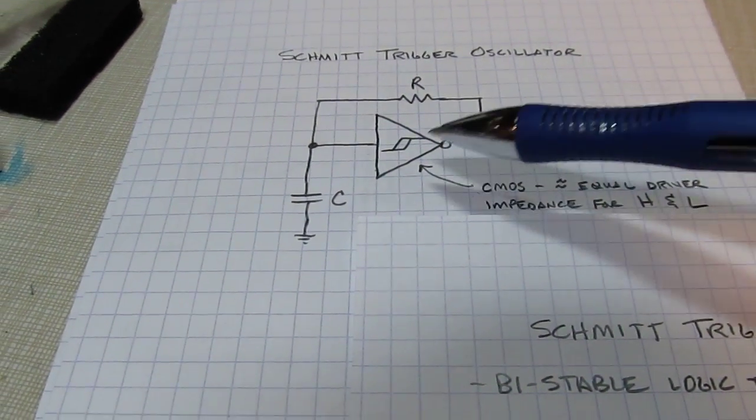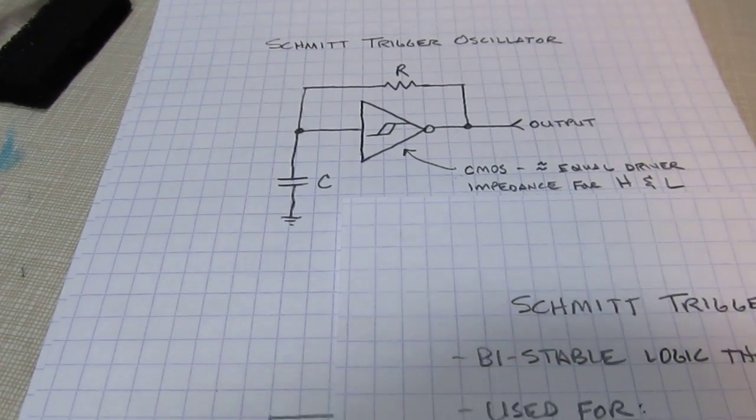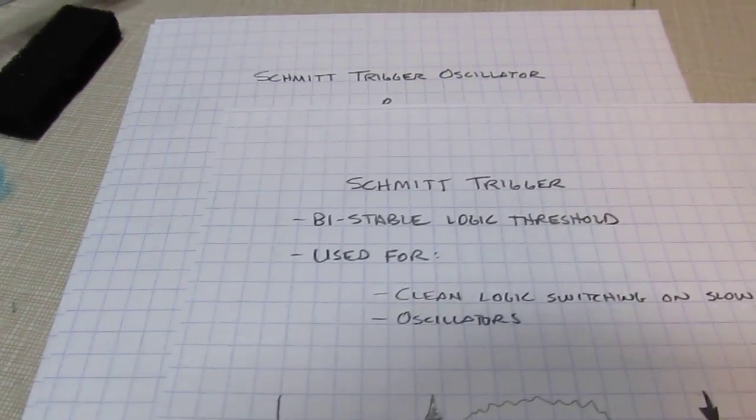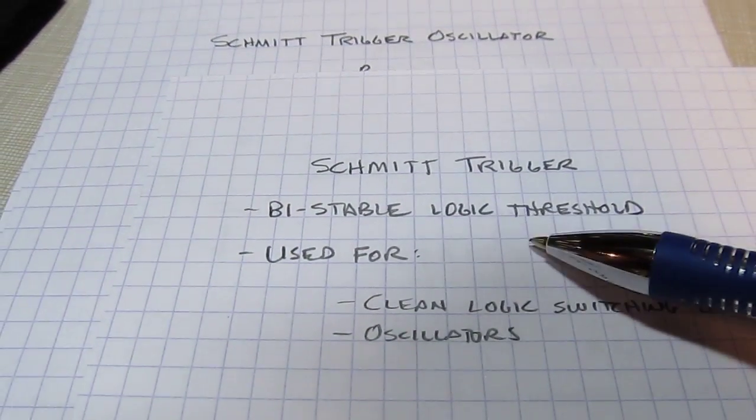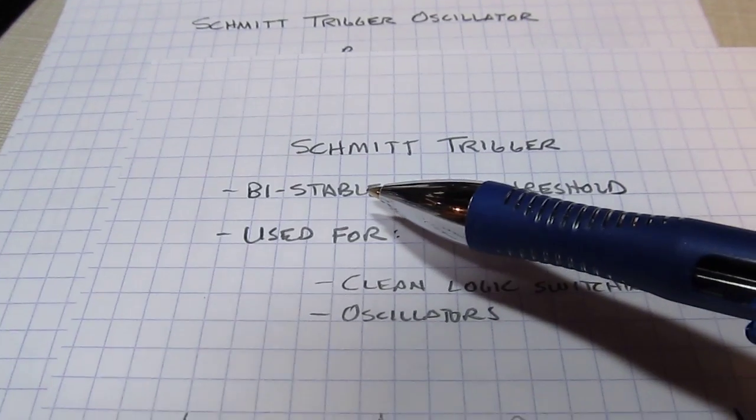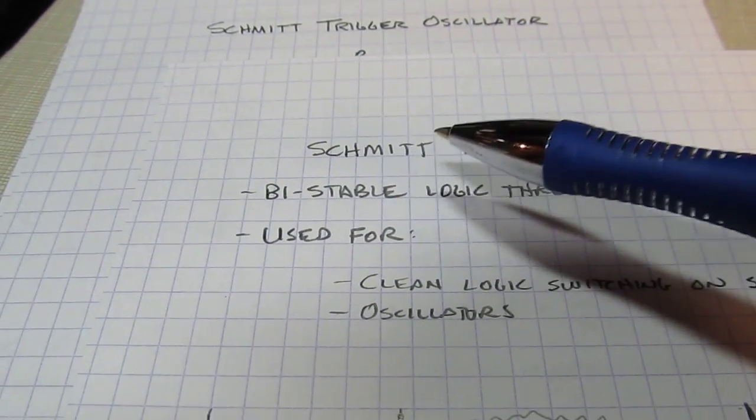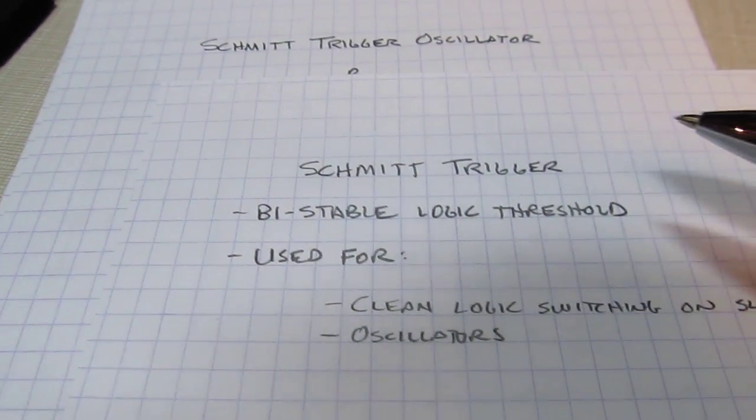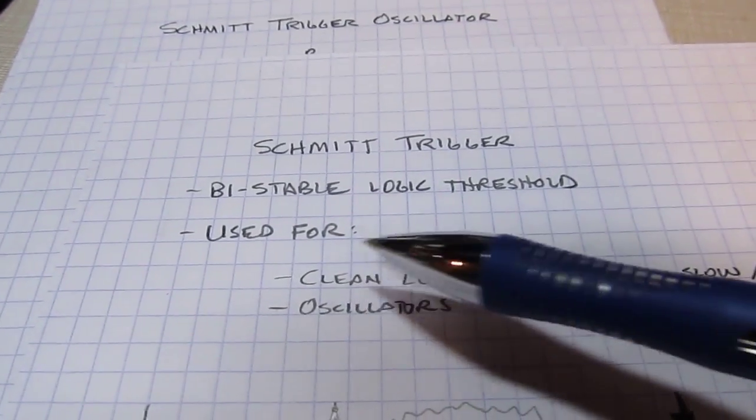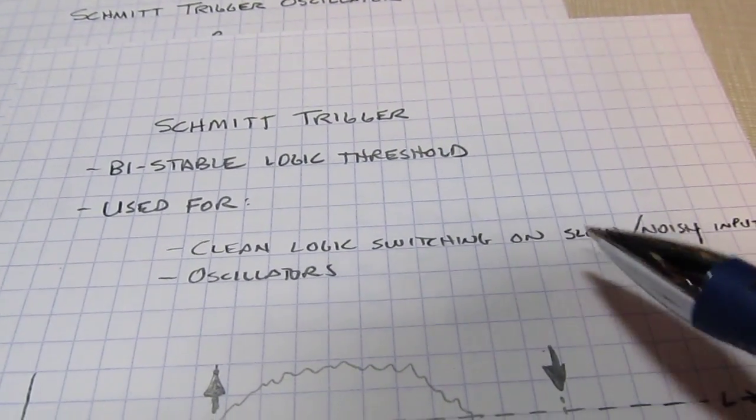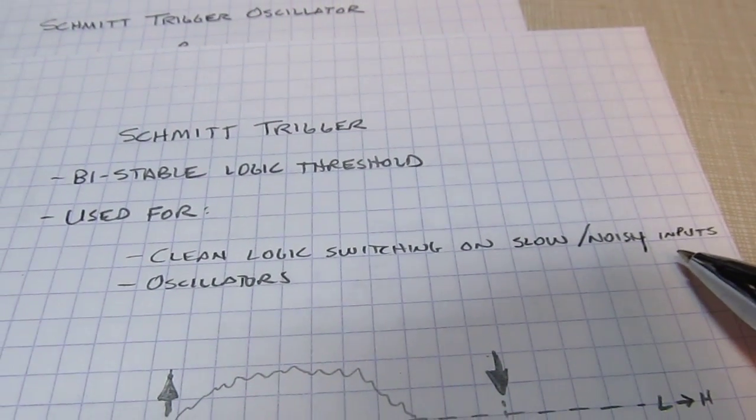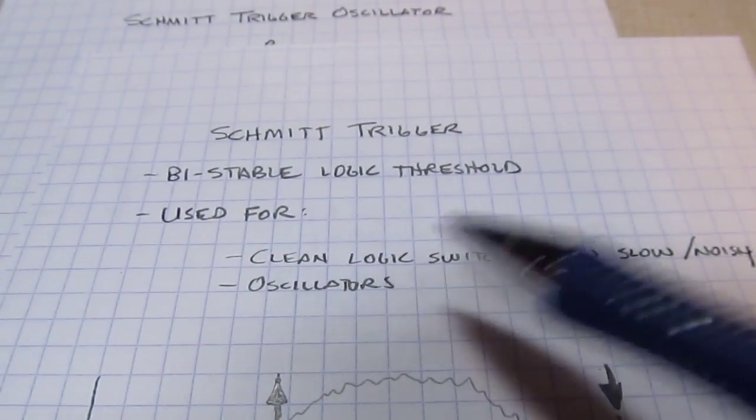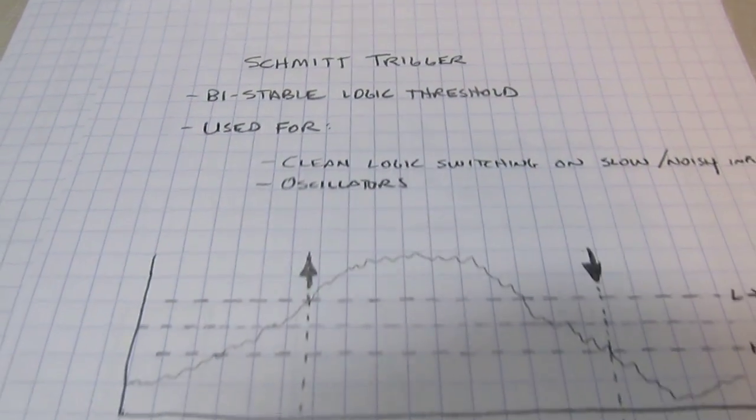So in order to understand that, we need to talk a little bit about what a Schmidt trigger is. A Schmidt trigger input is an input whose input logic threshold is bistable, meaning that it changes to one of two values depending on what the internal logic state is. And it's really useful for cleaning up the logic switching on slowly changing or noisy inputs, and also really good for oscillators. So let's talk about how it works.